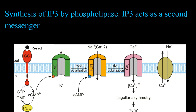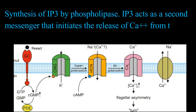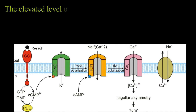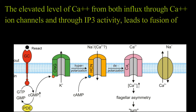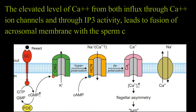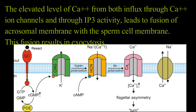The IP3 acts as a second messenger that initiates the release of calcium from the acrosome into the sperm. The elevated level of calcium from both influx through the calcium ion channels and through IP3 activity leads to fusion of the acrosomal membrane with the sperm cell membrane. This fusion results in exocytosis of acrosomal enzymes.